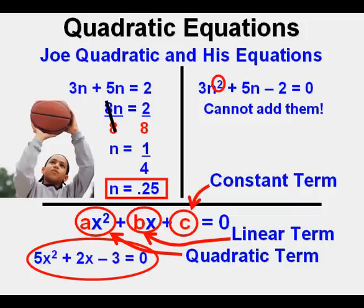Let's look at some examples in the lower left corner of the screen. 5x squared plus 2x minus 3 equals 0. Or you could have x squared minus 6x plus 2 equals 0. Or you could have 2x squared plus 5 equals 0 and have no linear term. Or you might have 5x squared minus 2x equals 0 and have no constant term.